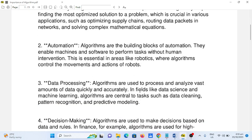Number two, automation. Algorithms are the building blocks of automation. They enable machines and software to perform tasks without human intervention. This is essential in areas like robotics where algorithms control the movements and actions of robots.